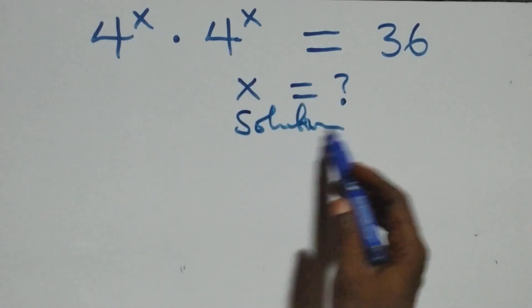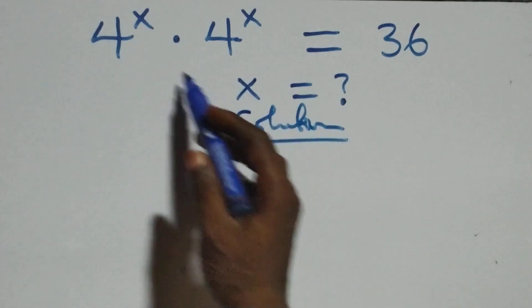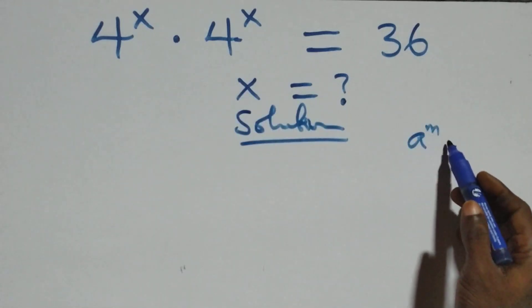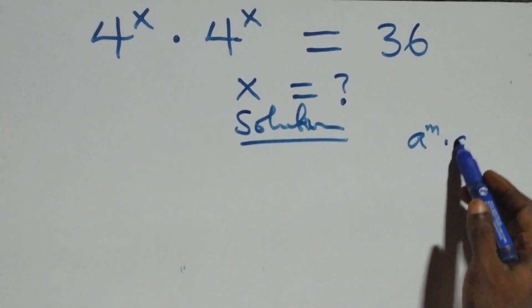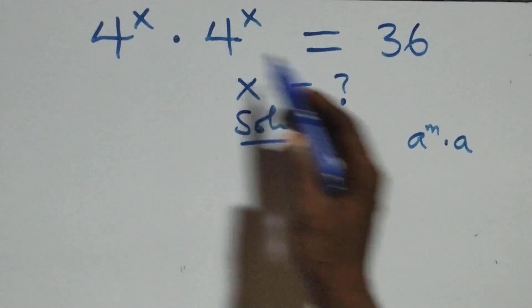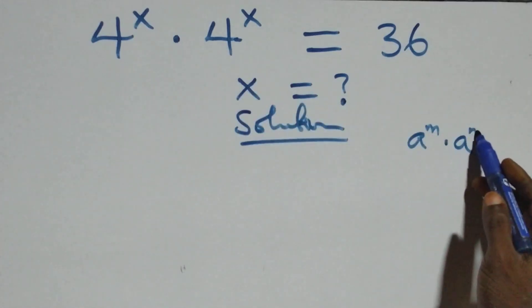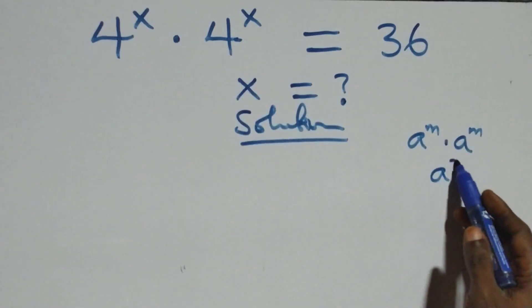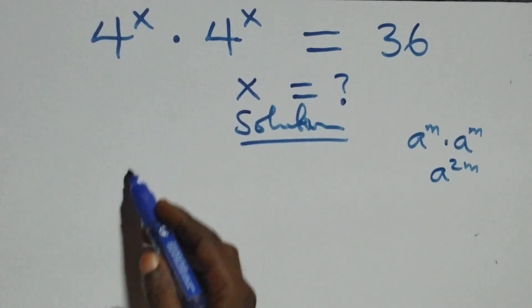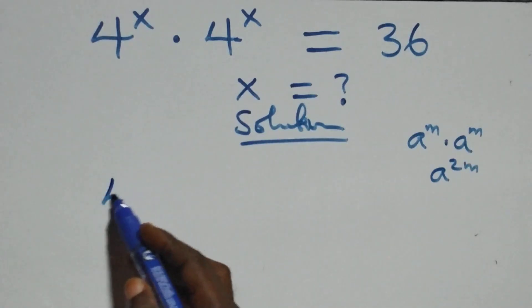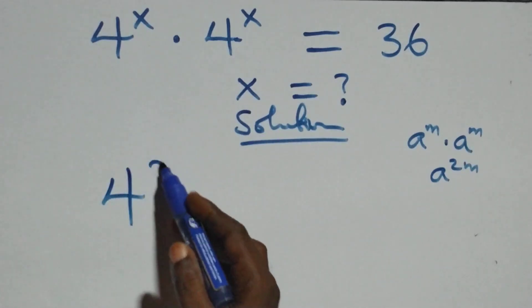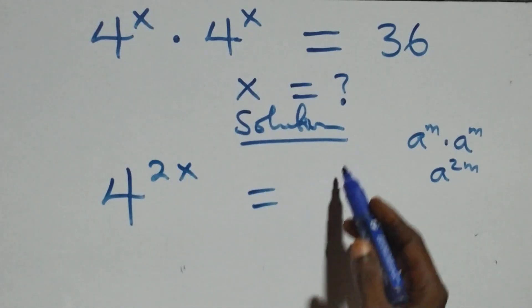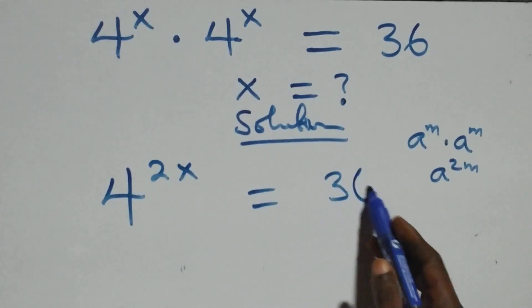And what we have here? This follows when we have the same base multiplying: a raised to power m, times a raised to the same power m. We can write this as a raised to power m plus m, that's 2m. So here we have 4 raised to power x plus x, that's 2x, equals to 36.